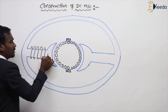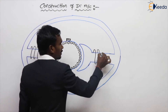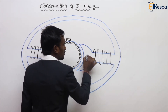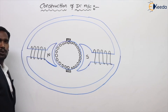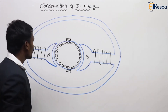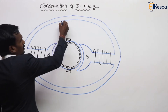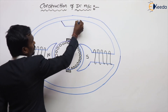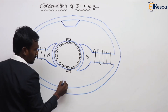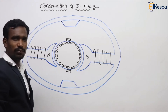This is, for example, the north pole, and this is the south pole, which creates the poles. Next, here some poles are there — those are called inter poles. These are called inter poles of my machine, exactly in the middle.